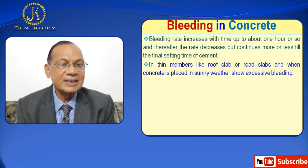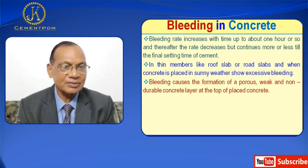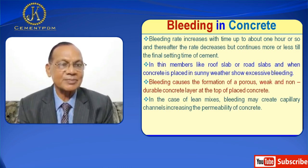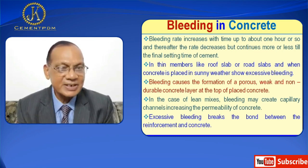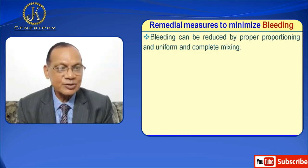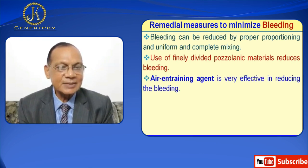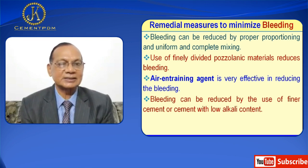In the case of lean mixes, bleeding may create capillary channels, increasing the permeability of concrete. Excessive bleeding breaks the bond between the reinforcement and concrete. Now I will discuss remedial measures to minimize bleeding. Bleeding can be reduced by proper proportioning and thorough complete mixing. Use of finely divided pozzolanic materials reduces bleeding. Air entraining agent is very effective in reducing bleeding. Bleeding can be reduced by the use of finer cement or cement with low alkali content. Rich mixes are less susceptible to bleeding than lean mixes.